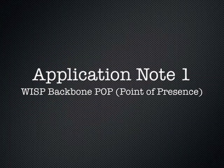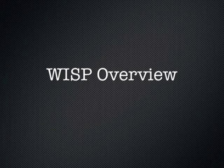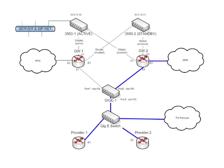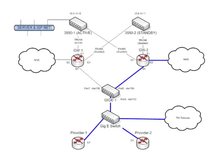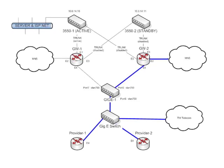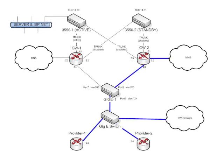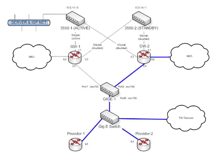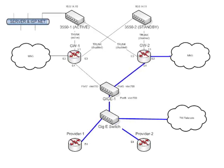Today's node features a backbone tower serving various distribution towers for a WISP or wireless ISP. Let's begin with an overview of how this network is organized. First, the WISP has a connection to one or more tier one or tier two internet providers. In this case, the WISP has multiple Ethernet connections to multiple ISPs via BGP or Border Gateway Protocol for full failover and redundancy.